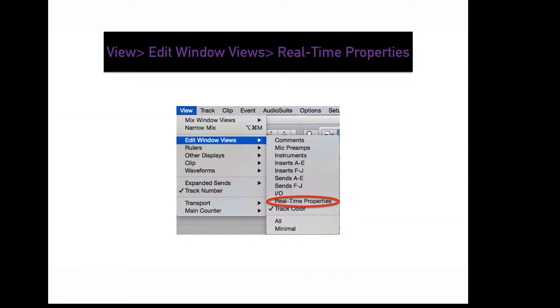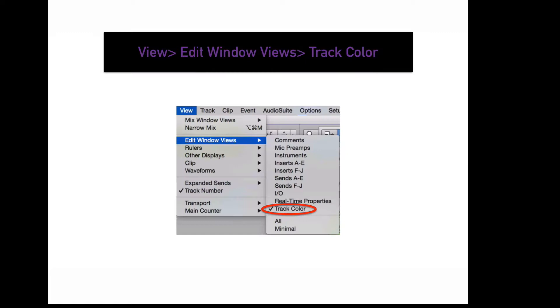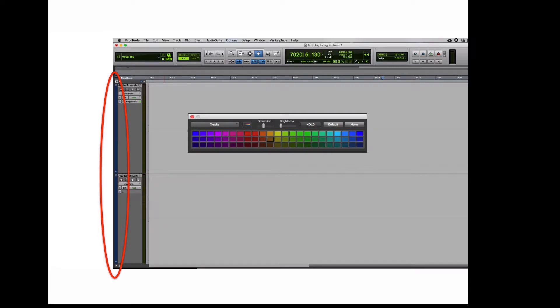To display your real-time properties in your edit window, go to View, Edit Window Views, Real Time Properties. This will display multiple real-time properties on instrument and MIDI tracks. These parameters include quantization, duration, delay, velocity, and transposition once completely extended. To display track color in the edit window, go to View, Edit Window Views, Track Color. If you double-click on the track color, you can open up the color palette and change the track color.